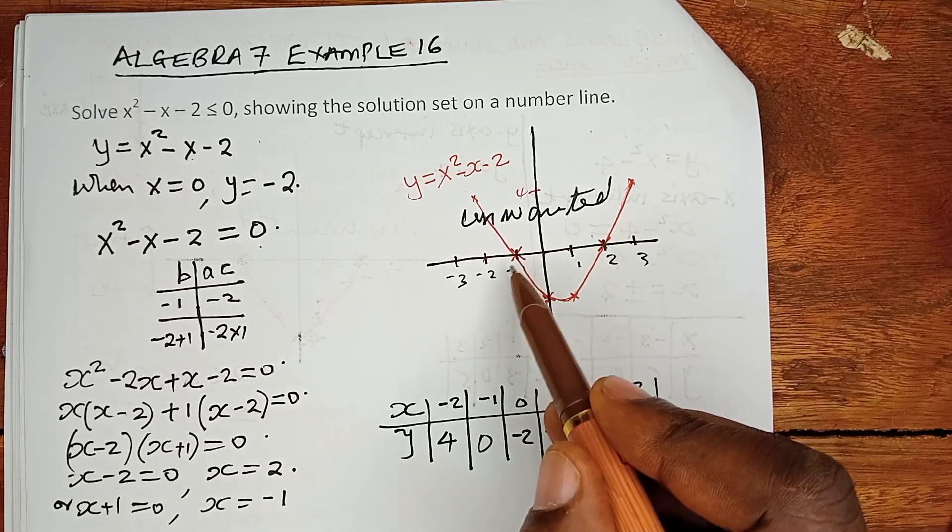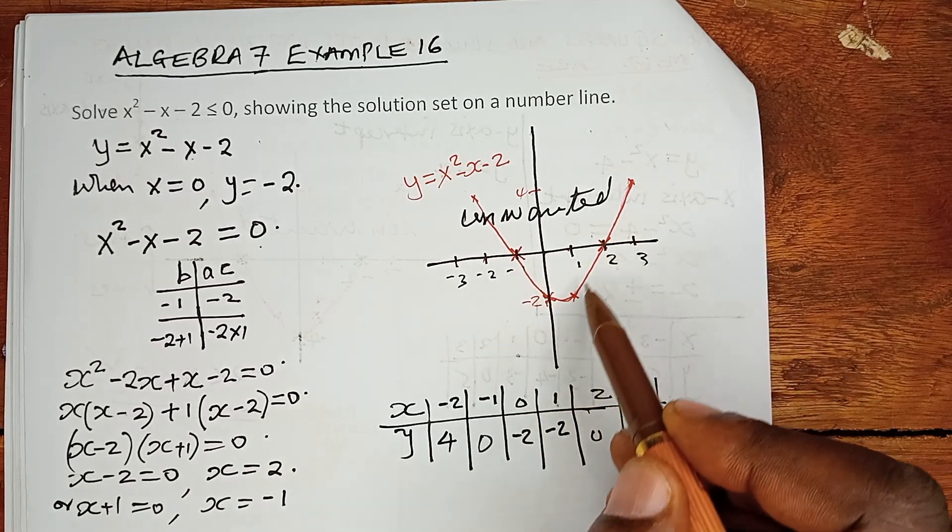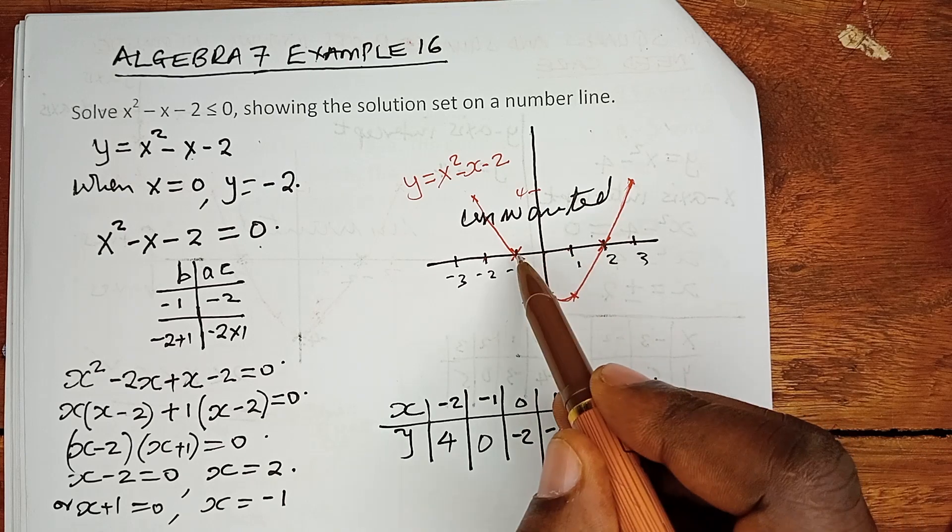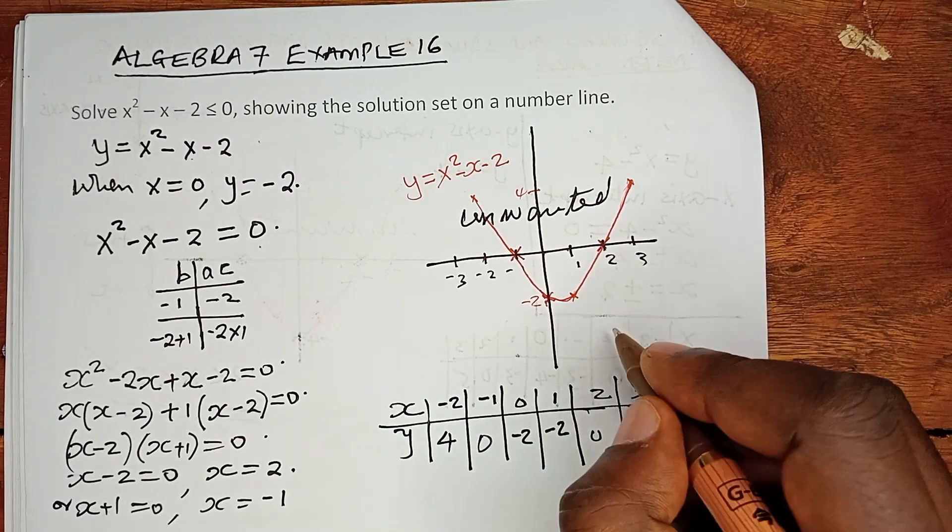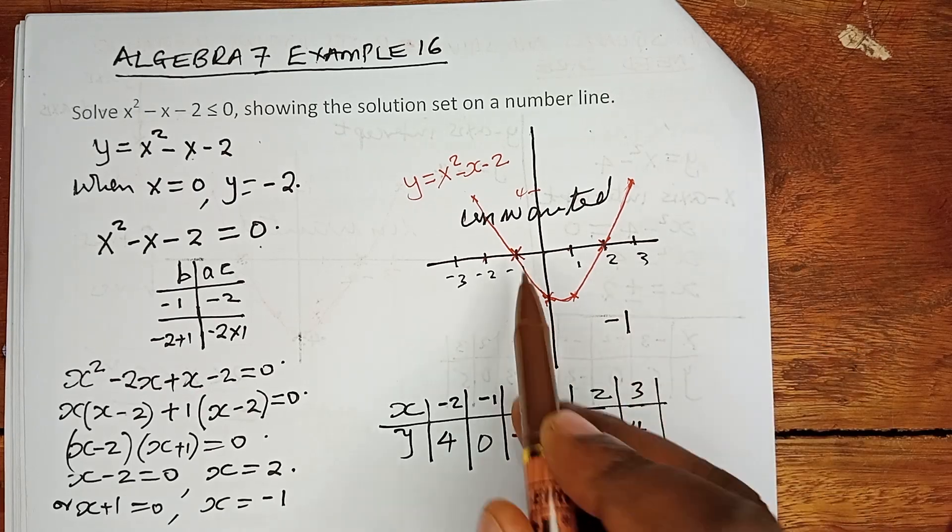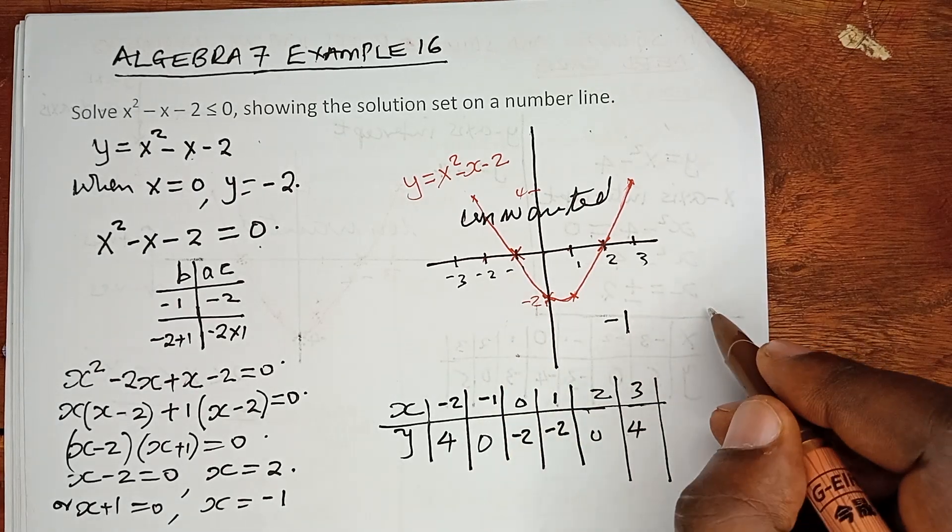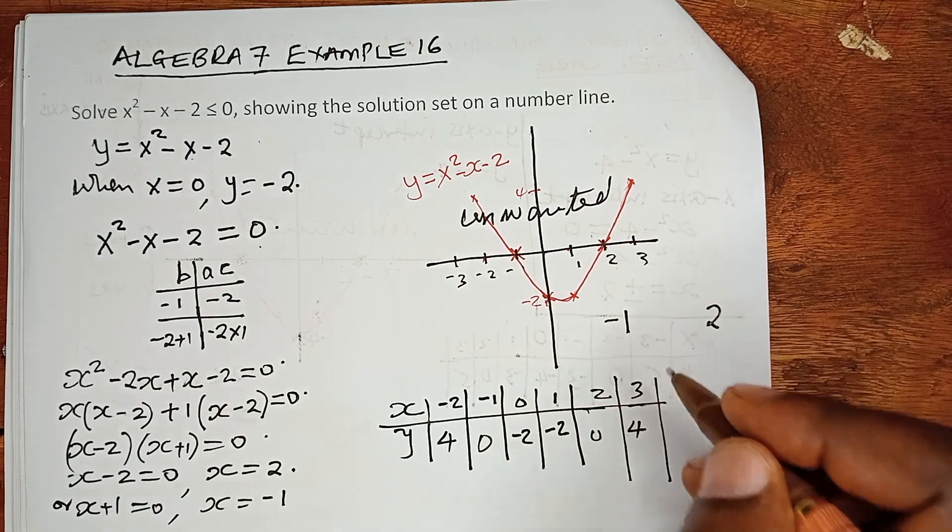Unwanted region. So we need this one to be less than, below the line, below the x-axis. That's when the values of y are negative. That means what? For this to happen, you can see we have a continuous line here. We have the boundary as negative 1. We have another boundary as 2.